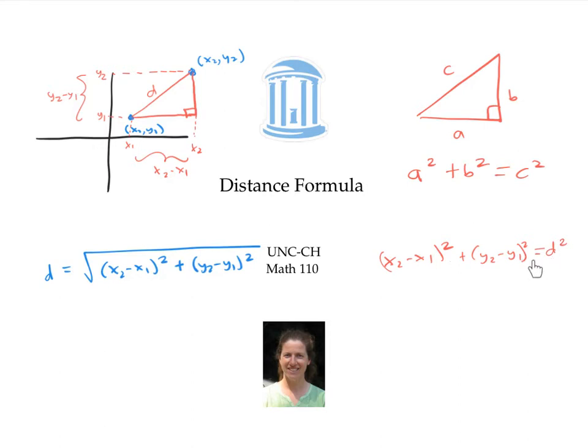Taking the square root of both sides of this equation, we get the square root of x2 minus x1 squared plus y2 minus y1 squared is equal to d. We don't have to worry about using plus or minus signs when we take the square root because distance is always positive. So we've derived our distance formula.